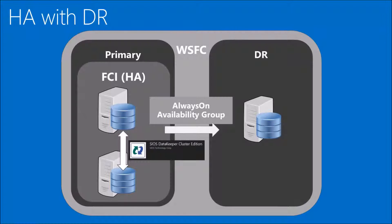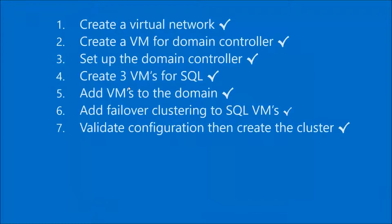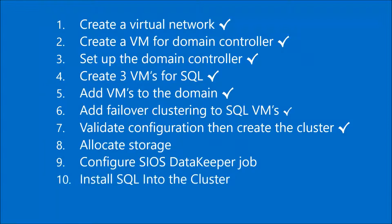I'm pulling up this graphic to remind you what we've done so far. We have three VMs in Azure and we've set up our Windows Server Failover Cluster. Today we're going to set up the Failover Cluster Instance. To set up the FCI, we're going to allocate storage, configure the SIOS Data Keeper software and create a job for SIOS, and then install SQL Server into the cluster.